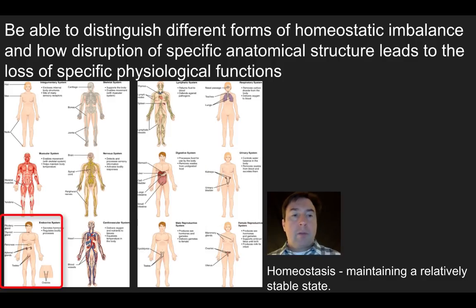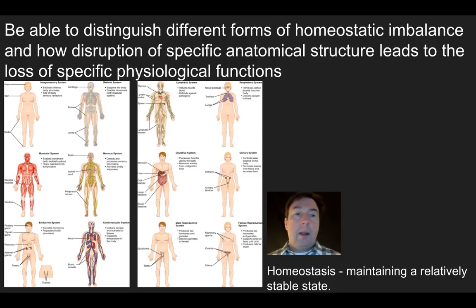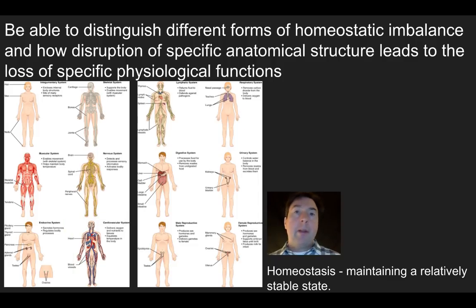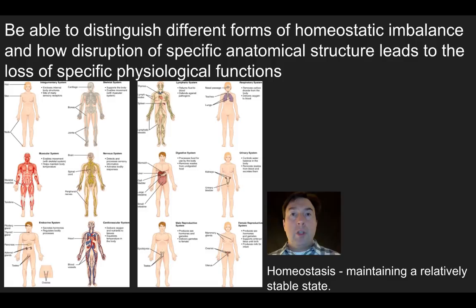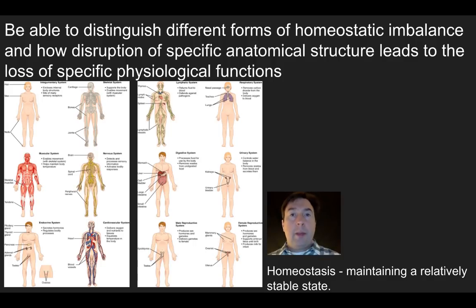In the lower left, we have the endocrine system, which receives signals, produces hormones, releases them into the circulatory system, and targets other cells to respond. Next is the cardiovascular system — the arteries, veins, heart, and capillaries that move materials throughout the body. The last two images are the male and female reproductive systems. These produce gametes, facilitate their fusion, and within the female reproductive system the zygote develops into an embryo, then a fetus, which is nourished until birth.